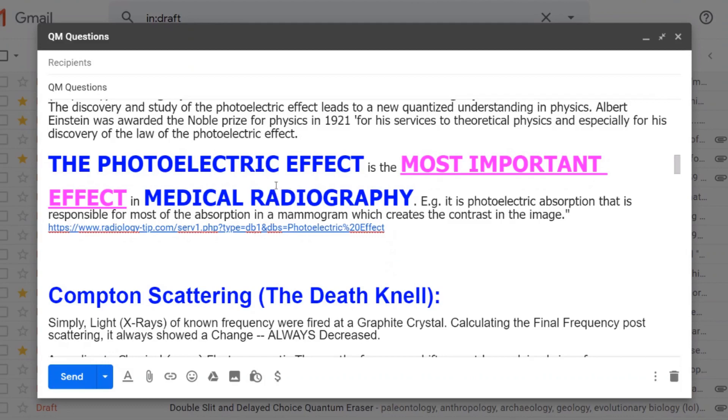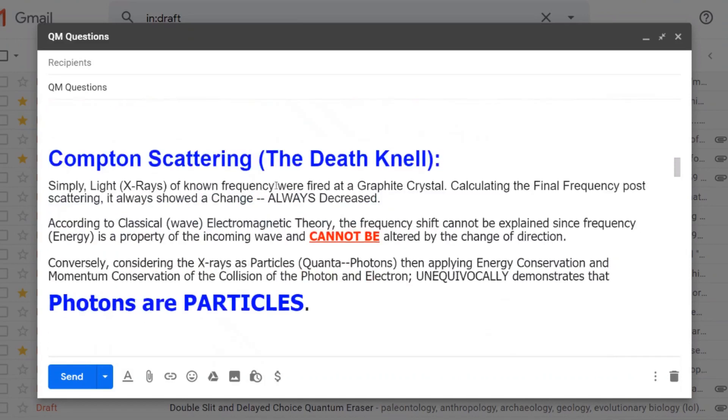Number one: Compton scattering. Simply, light X-rays of known frequency were fired at a graphite crystal. Calculating the final frequency post scattering, it always showed a change, it always decreased. According to classical wave EM theory, the frequency shift cannot be explained since frequency energy is a property of the incoming wave and cannot be altered by the change of direction.